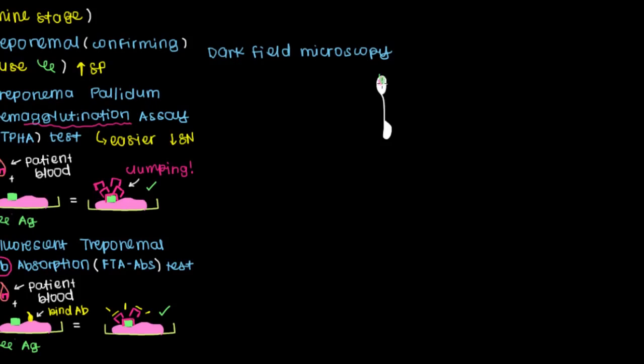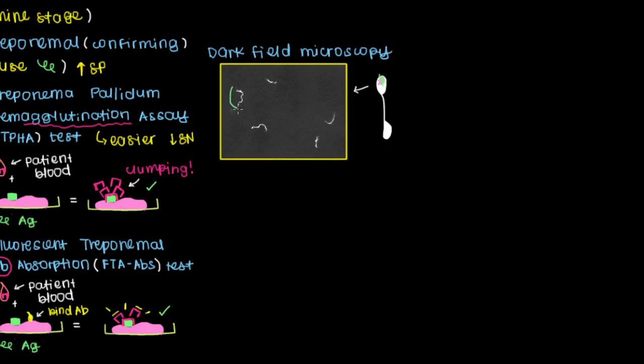If this patient does in fact have syphilis, you'll actually see spirochetes under this microscope. These squiggly things are the syphilis treponemal spirochetes that are present in this sample. If you see these guys under the dark field microscope, that's a very high specificity test, which means you're less likely to have false positives, and instead confirm that this person is infected with syphilis.